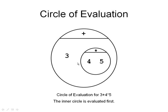And then we add the result of that to 3. So this inner circle finds the value of 4 times 5, and the outer circle finds the sum of 3 plus the value of the other circle. So this is the circle of evaluation for the expression 3 plus 4 times 5.